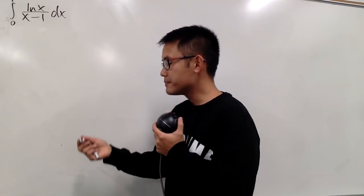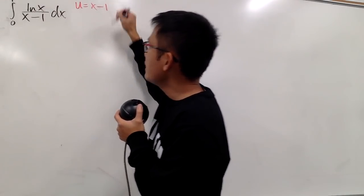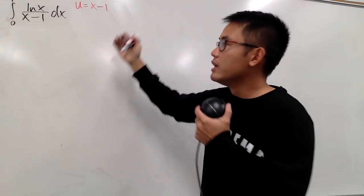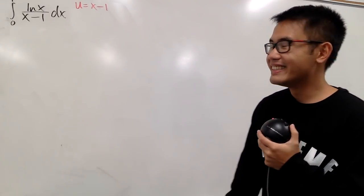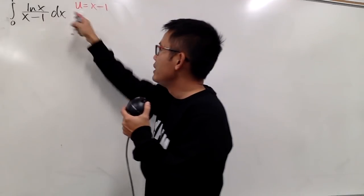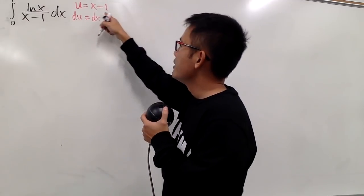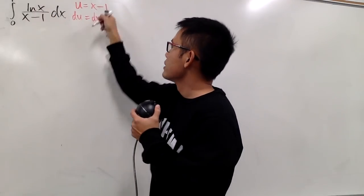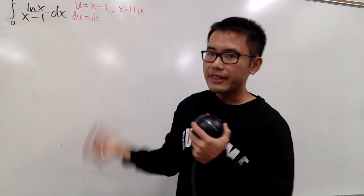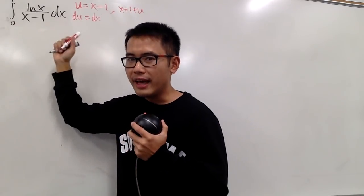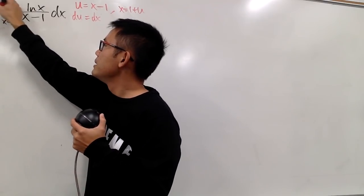Let's go from there — maybe it's going to work out pretty nicely for us. Let u equal x-1. We differentiate both sides to get du = dx. We also need x for the ln, so adding one on both sides gives x = 1+u. Now we take this integral from the x-world to the u-world, and be sure to change the lower and upper limits as well.